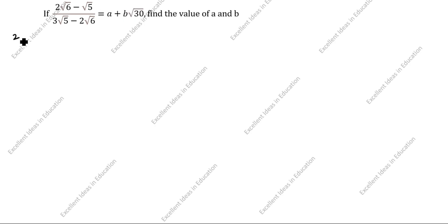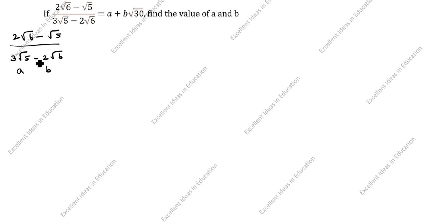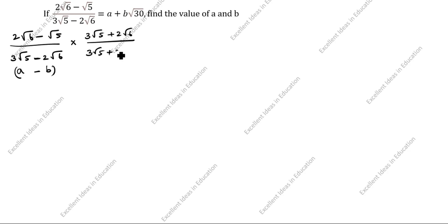Now we will find the values of a and b. What is given in this question: 2 root 6 minus root 5, divided by 3 root 5 minus 2 root 6. You see the denominator — it is given as two values: this is a, this is b, and the sign is minus, so a minus b. Now we will rationalize the denominator. Since it is a minus b, we multiply by a plus b — that is, 3 root 5 plus 2 root 6, divided by 3 root 5 plus 2 root 6.